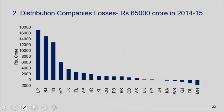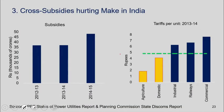The second challenge: distribution companies face huge losses. The states with the highest losses are familiar — UP, Rajasthan, Tamil Nadu, Madhya Pradesh, and so on. These losses relate to a key dynamic: the way it works — almost like everything in India, whether it's railway tariffs, power tariffs, or the GST — we try and use pricing as a tool for changing income distribution. For agriculture and domestic consumers we try and keep tariffs low, but once you do that you have to charge higher tariffs to other sectors — this is called cross-subsidization.